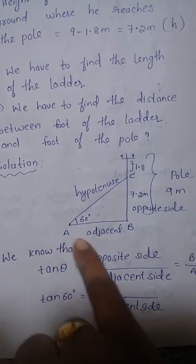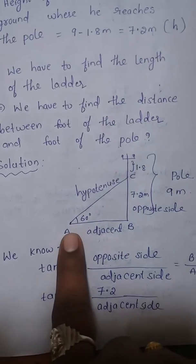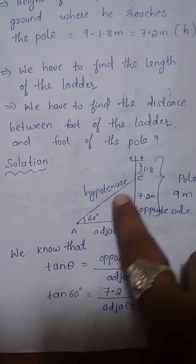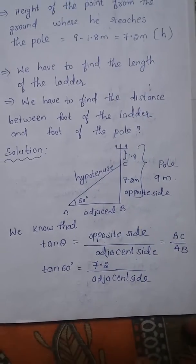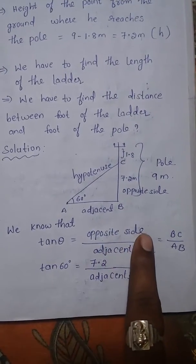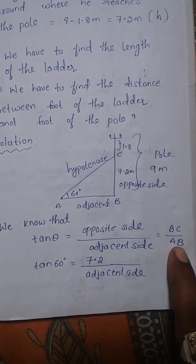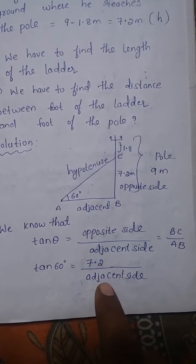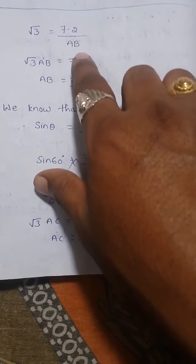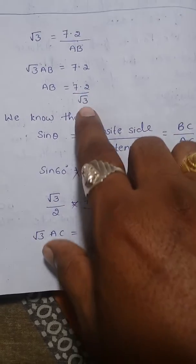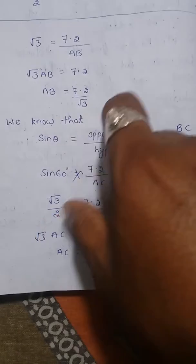We have to find AB, the distance between the foot of the ladder and the foot of the pole, and also AC, the length of the ladder which is the hypotenuse. We know that tan θ = opposite side / adjacent side = BC / AB. So tan 60 = 7.2 / AB. Since tan 60 = √3, by cross multiplication: √3 × AB = 7.2, therefore AB = 7.2 / √3.